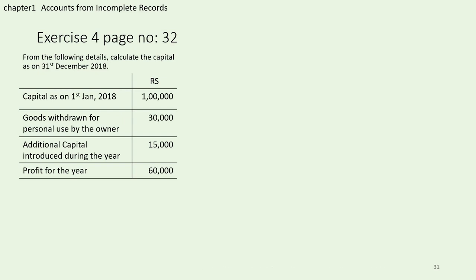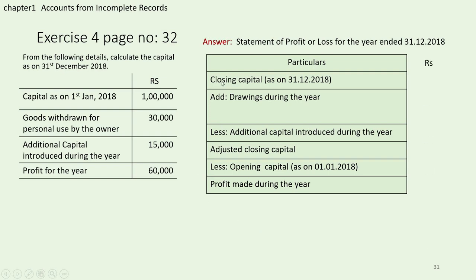We proceed with the answer. Write the heading: Statement of Profit or Loss for the year ended 31st December 2018. Format: particulars and rupees. Start with closing capital, add drawings, then minus additional capital introduced during the year to get adjusted closing capital. From that, minus opening capital to get profit made during the year. Since profit is given in this problem, we write profit made during the year.